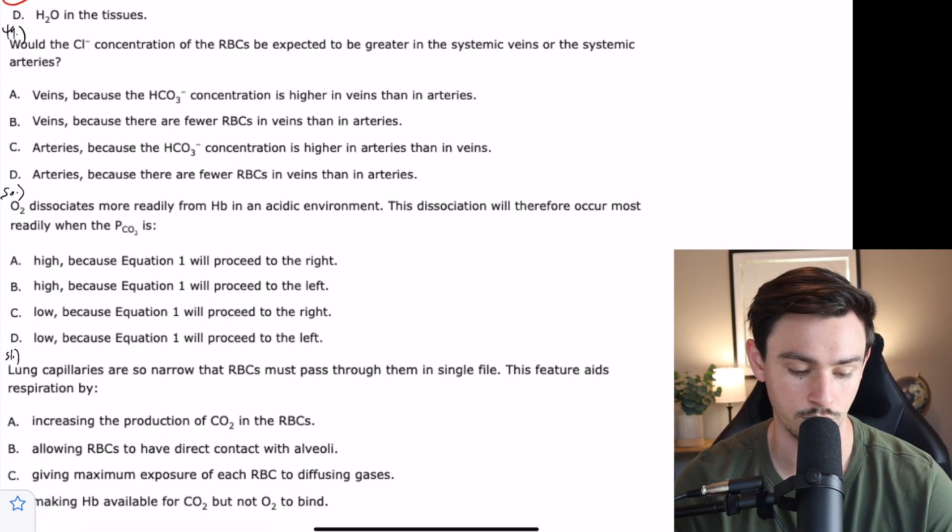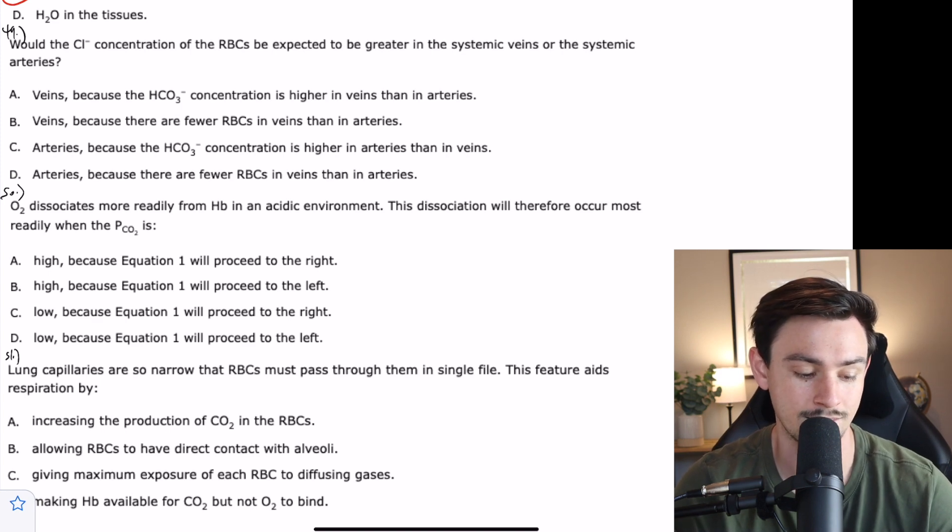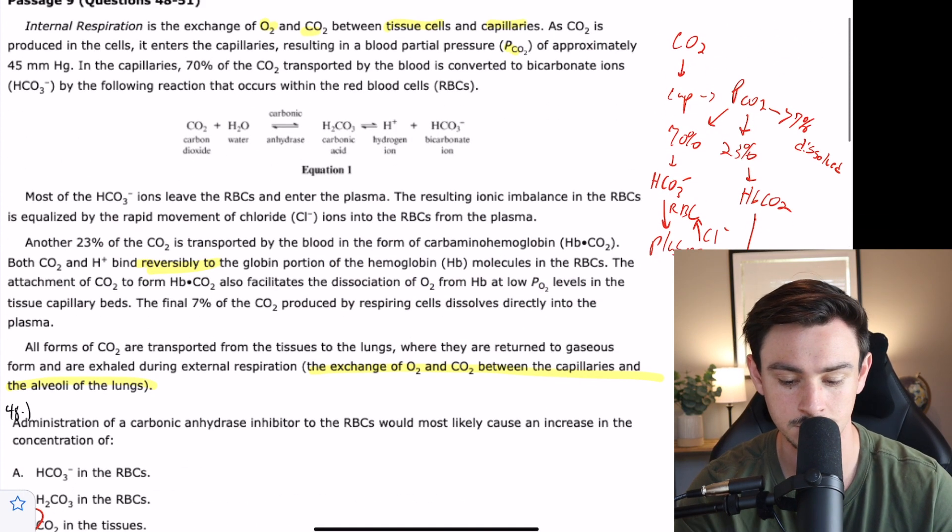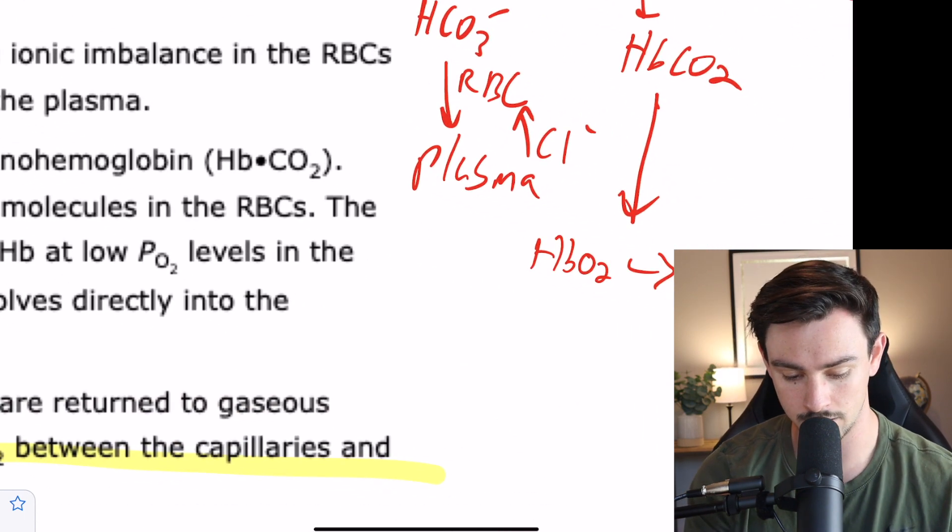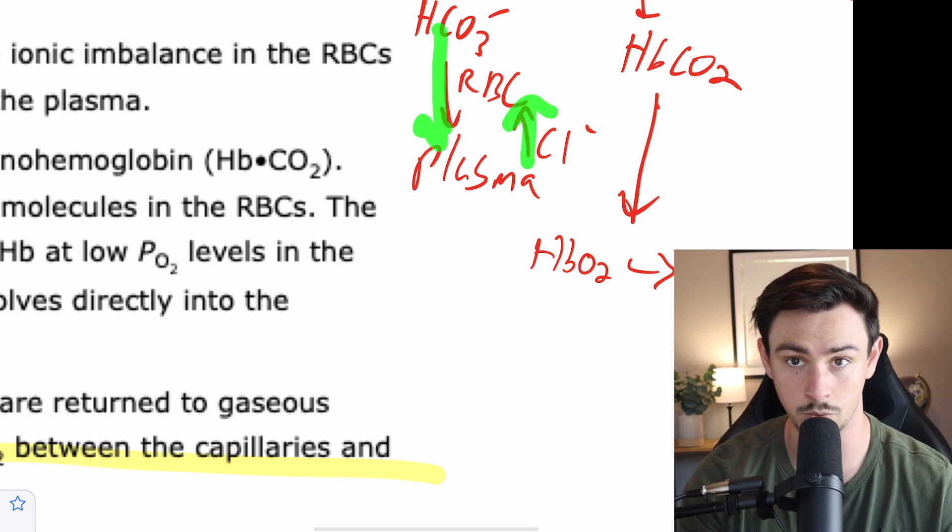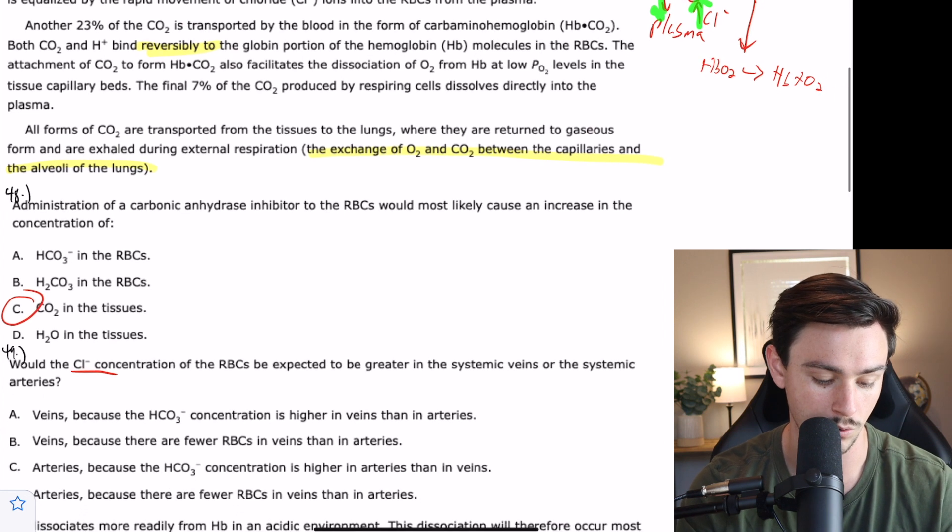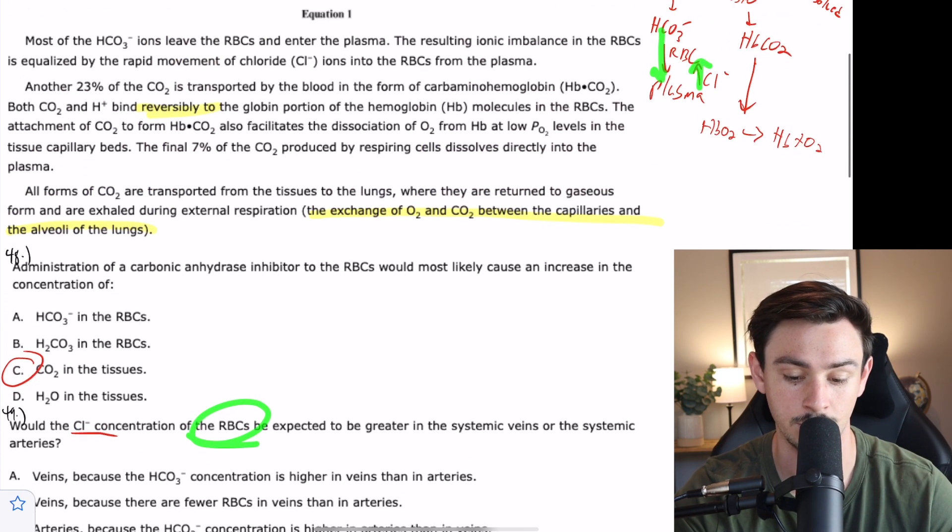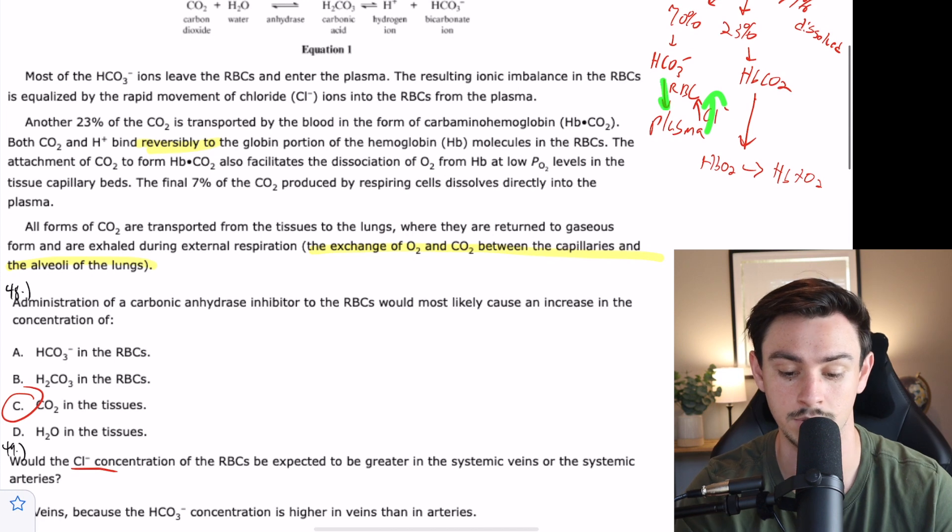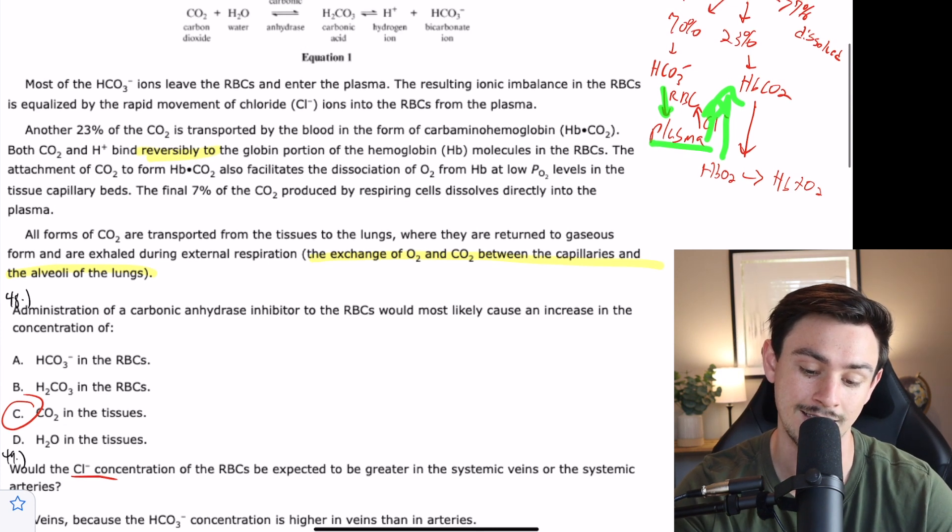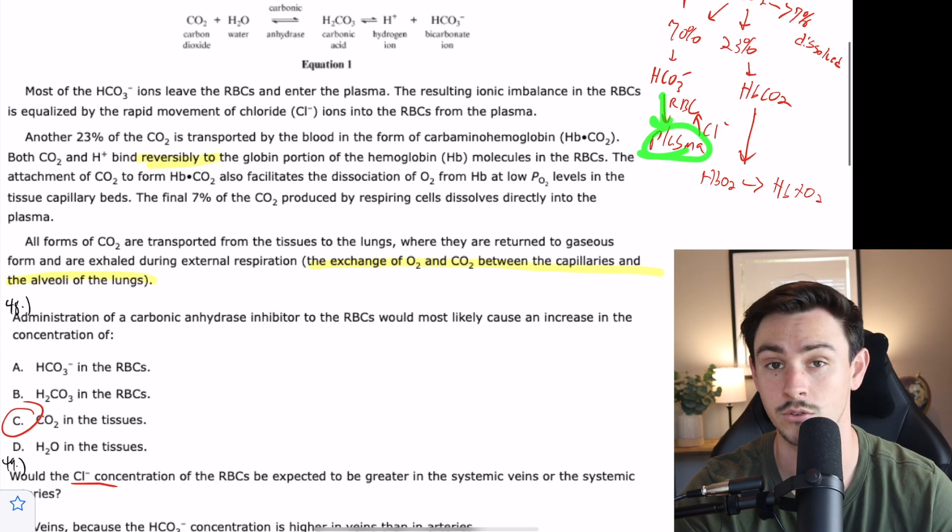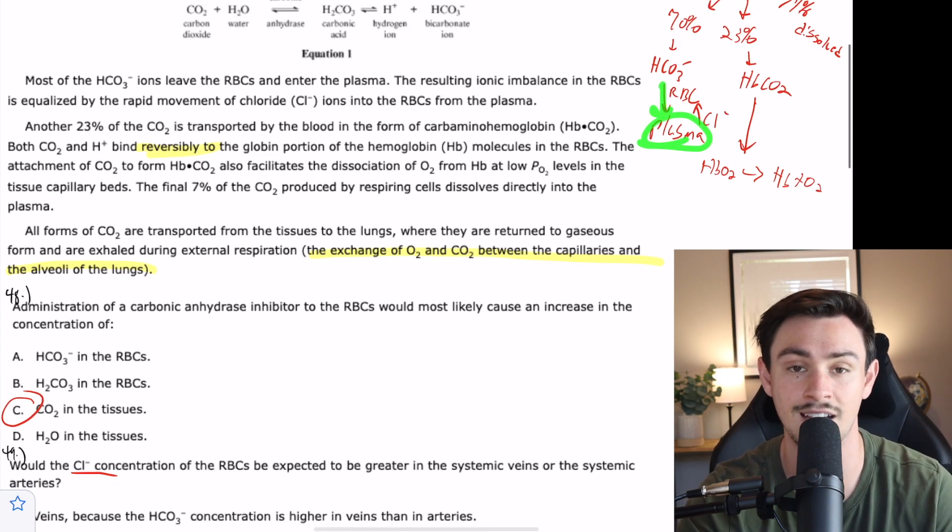Question 49 says, would the chloride concentration of the blood cells be expected to be greater in systemic veins or in the systemic arteries? Our passage told us that chloride builds up in the plasma and then gets exchanged with bicarbonate to the red blood cells. If it's the highest in the red blood cells, that means it has been exchanged at a higher rate. That means we're also looking for the answer choice that has bicarbonate getting exchanged the most.